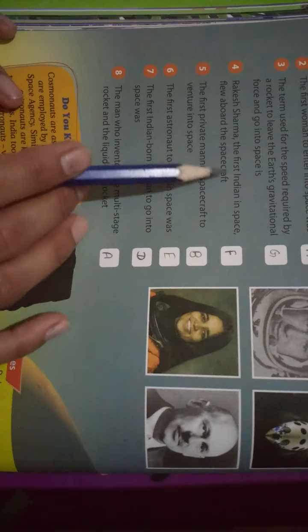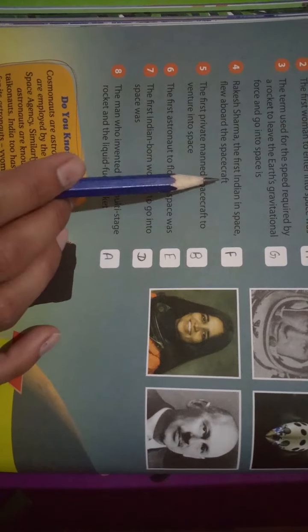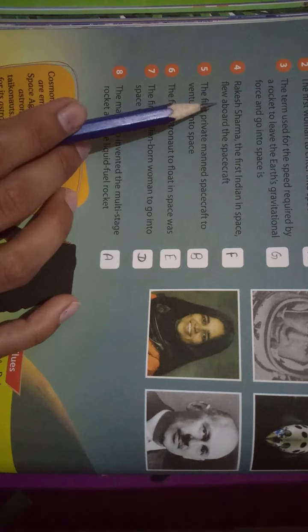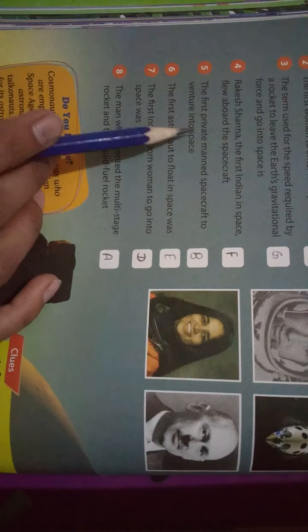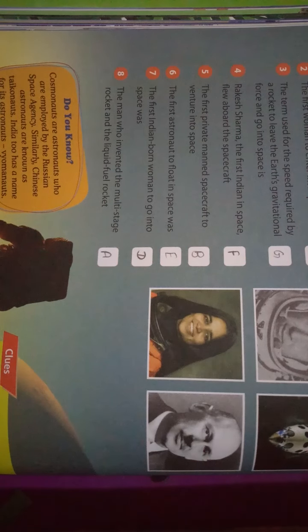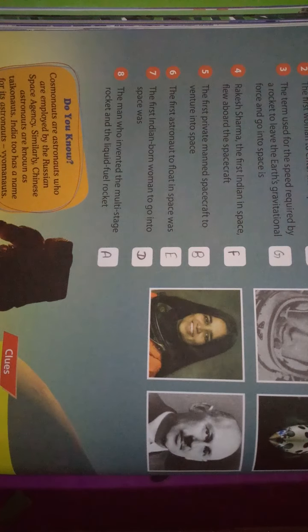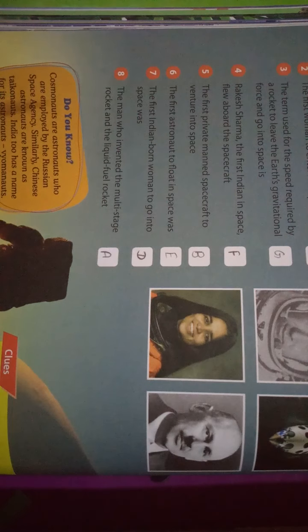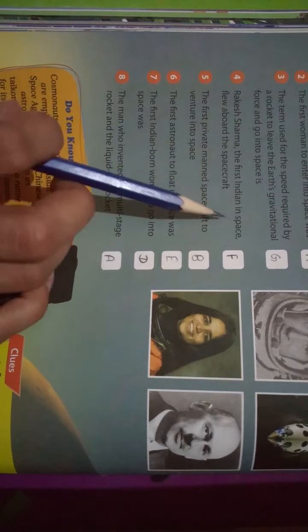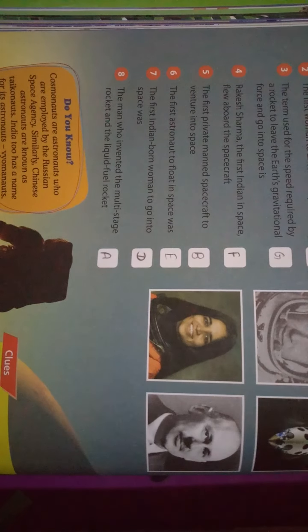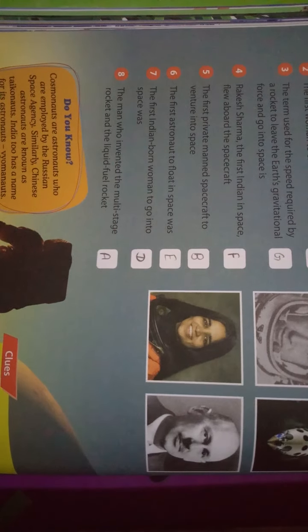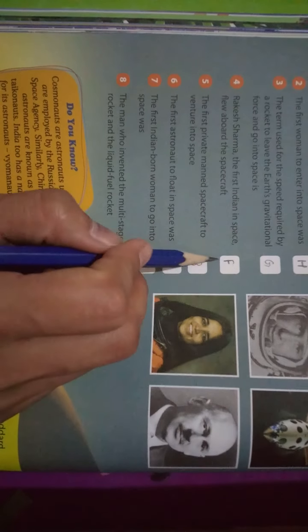Question number 4: Rakesh Sharma, the first Indian in space, flew aboard the spacecraft. Who was the spacecraft? The answer is F. Look at F: Soyuz T-11. What is the option here? F.